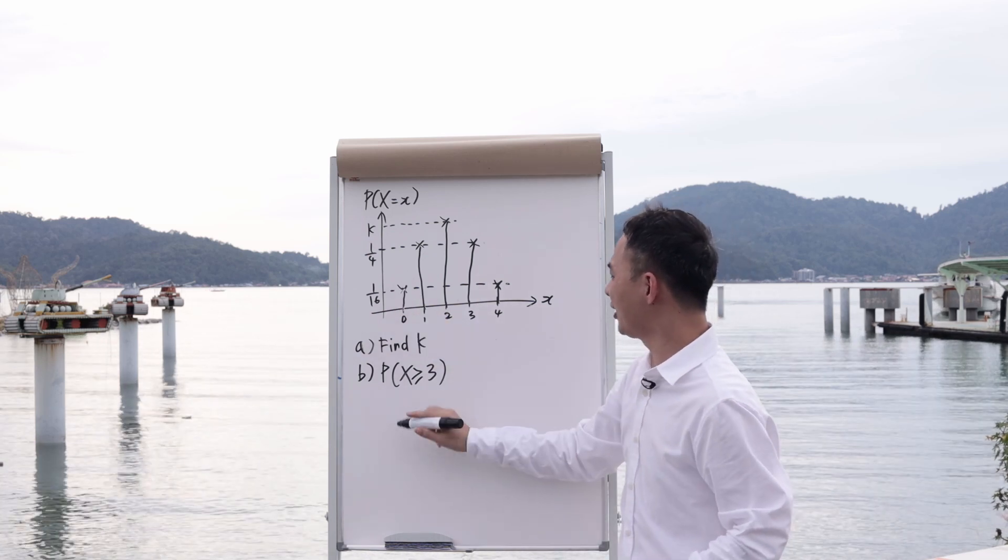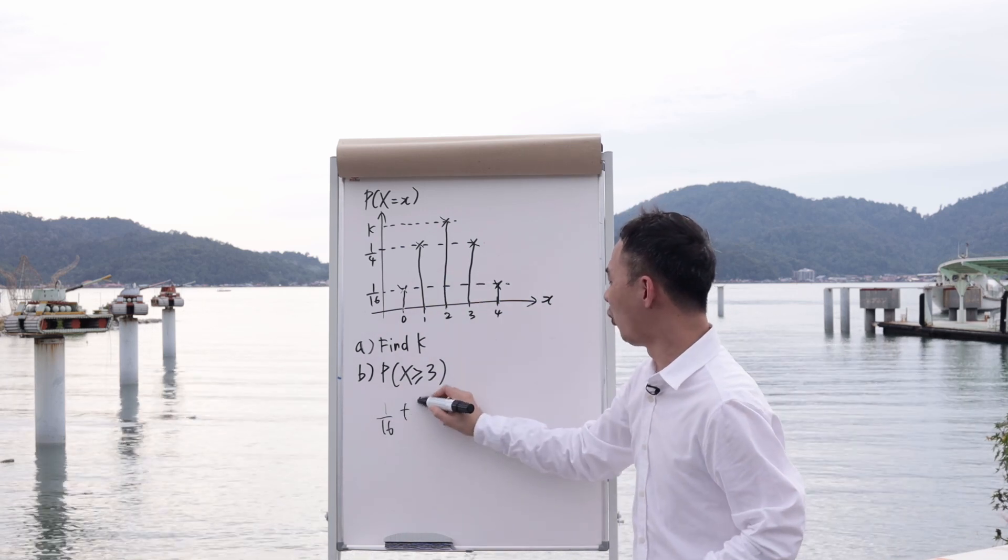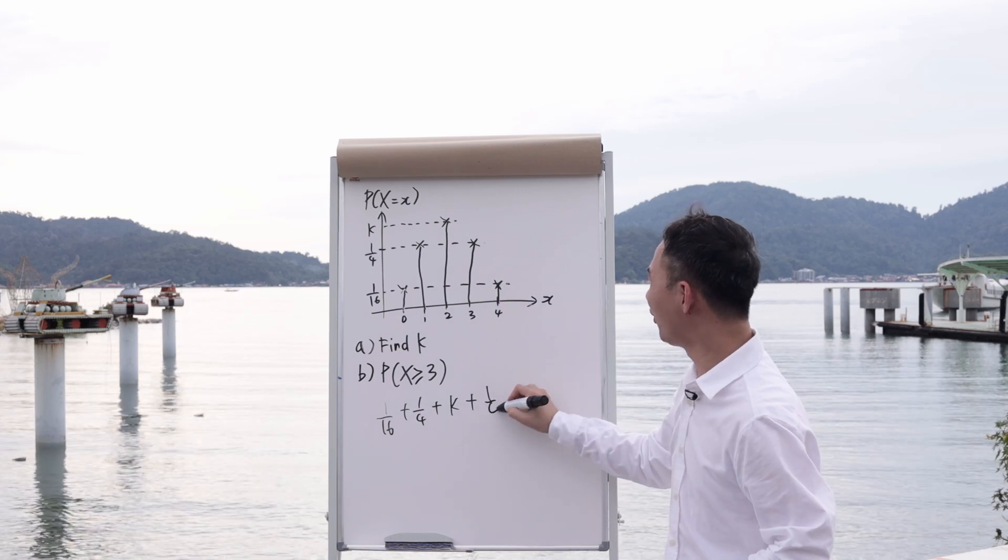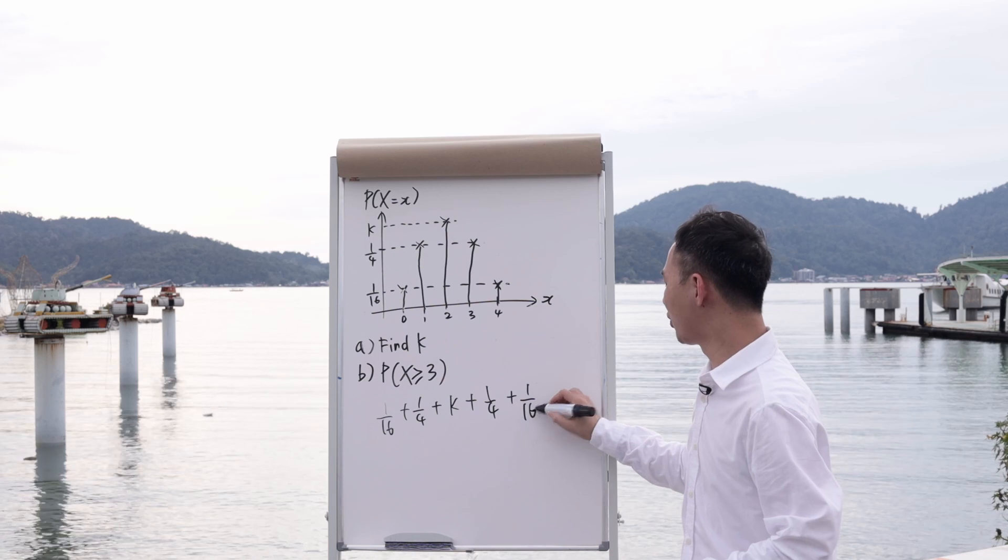So therefore, the first one is 1 over 16, the second one will be plus 1 over 4, the next one will be k, the next one will be 1 over 4 again, the last one will be 1 over 16. All plus together must equal to 1.